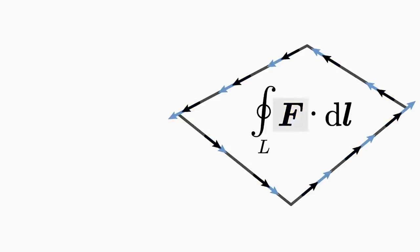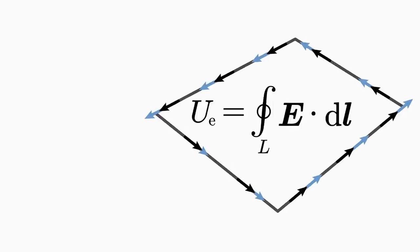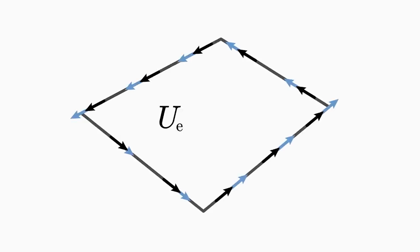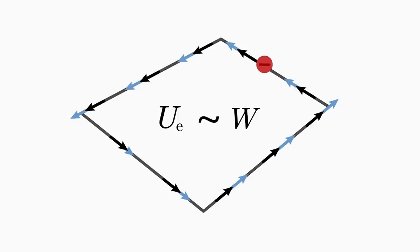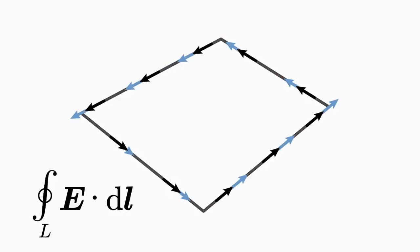If the vector field f in this line integral is an electric field E, then this line integral is referred to as electric voltage along the line L. On the other hand, when the vector field f is a magnetic field B, the line integral is called magnetic voltage along the line L. The voltage in the case of an electric field is proportional to the energy that a positively charged particle gains as it passes the line L. A negatively charged particle, on the other hand, loses this energy as it passes the line L. The line integral of the electric field — that is, the voltage — measures the energy gain or energy loss of charged particles as they pass through the line L under consideration.